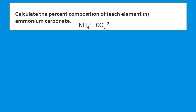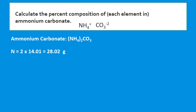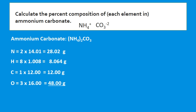The charges are +1 and −2. We need two ammonium ions to balance the carbonate ion's charge, because in an ionic compound the total charge equals zero. That gives us the formula (NH₄)₂CO₃. We find the molar mass: 2 moles of nitrogen, 8 moles of hydrogen (4 × 2), 1 mole of carbon, and 3 moles of oxygen. Adding all together gives us 96.08 g/mol.